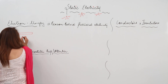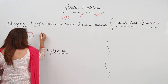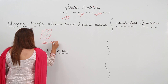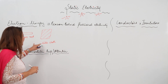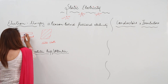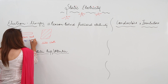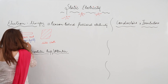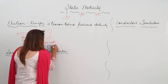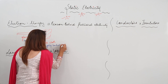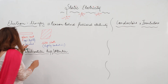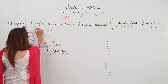Let's say this is my glass rod and I'm going to rub it with a silk cloth. When I rub the glass rod with silk cloth, there is electron transfer. In the glass rod, electrons are not tightly bound, as compared to the silk cloth where the electrons are more tightly bound.